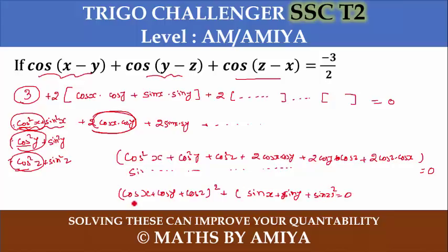Perfect square equal to zero means individual values are zero. It means cos x + cos y + cos z equals zero, and sin x + sin y + sin z equals zero. So your answer to this question is zero.